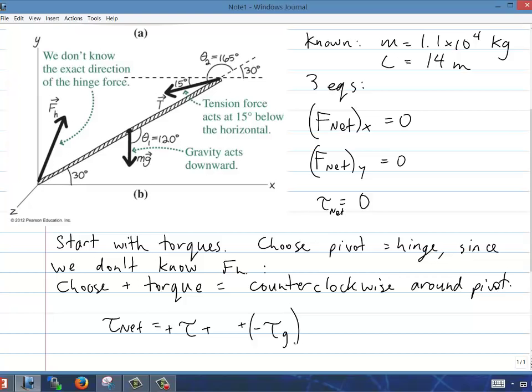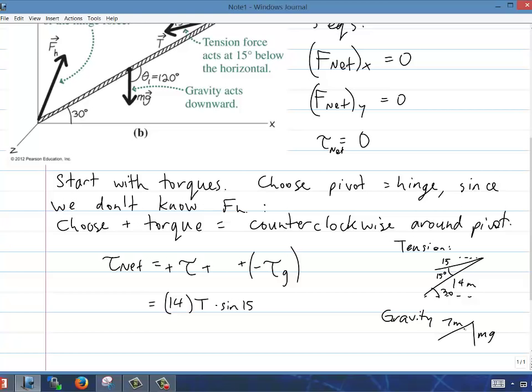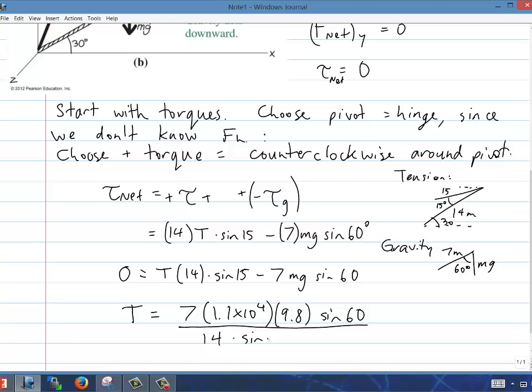Of those three equations, I think I'm going to start with the torques. We'll set net torque equals zero. As for the pivot, we'll choose the pivot equals the hinge, because we don't know this F sub H, what the hinge force is. Next I have to choose the direction for the torque. Let's choose a convention that counterclockwise around this pivot point will be positive. Since the pivot is at the hinge, the force of the hinge exerts no torque, because the lever arm there is zero. So the net torque is just the torque from the tension force, which will be positive, and then plus the tension from the gravity force, which is going to be clockwise there, so it'll be negative. Let's look at the tension force. It's down and to the left 15 degrees, and the lever arm is 14 meters up. There's a 15 degree angle there between the 14 meters and the tension force. So the torque there is 14 times T times sine of 15 degrees. As for gravity, gravity is acting straight down, 7 meters away from the pivot. There's a 60 degree angle between the gravity force and that 7 meters. So you're minusing off 7 times the mg times sine 60. Solving for T, I get 7 times the mass there times g times sine 60, and then divided by the 14 meters times sine 15. Plugging all that into my calculator, I get 1.8 times 10 to the 5 newtons.